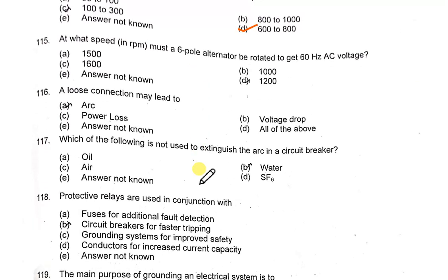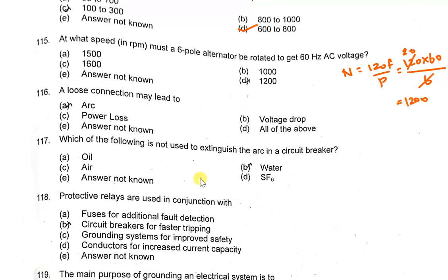At what speed must a 6-pole alternator rotate to generate 60 Hz AC voltage? Using N = 120F / P, with frequency 60 Hz and 6 poles, the alternator must rotate at 1200 rpm.